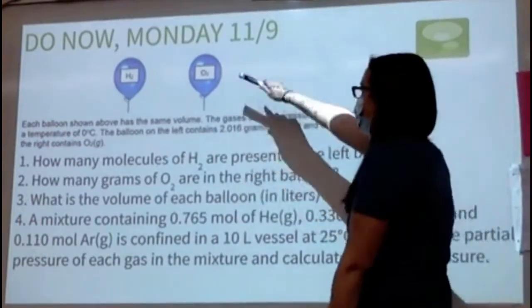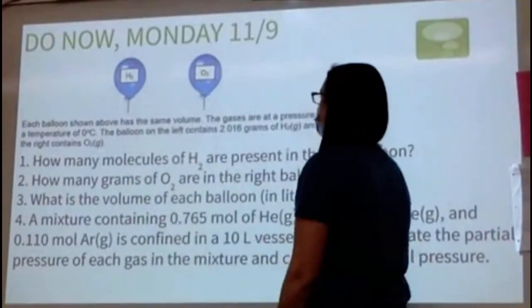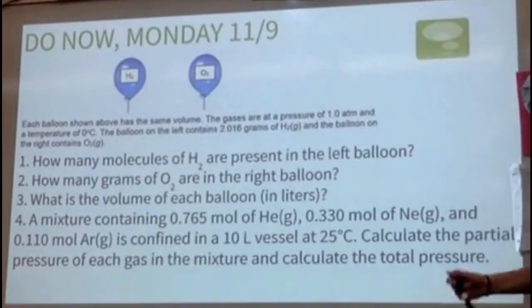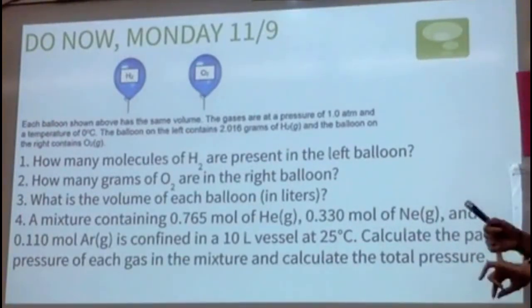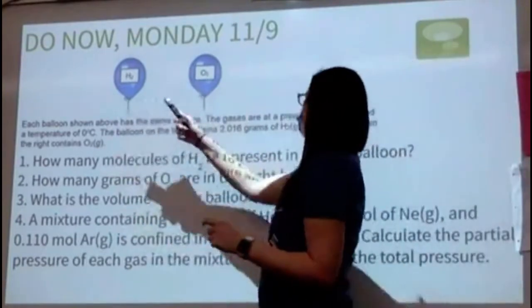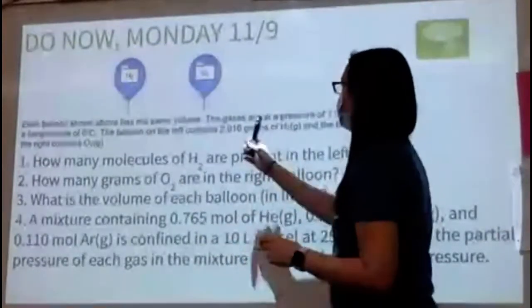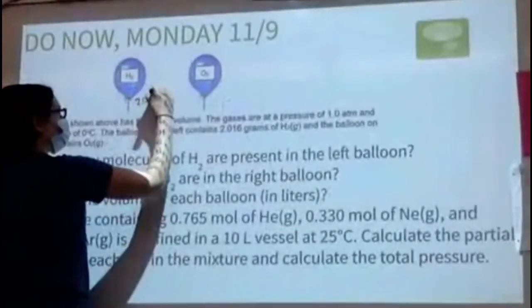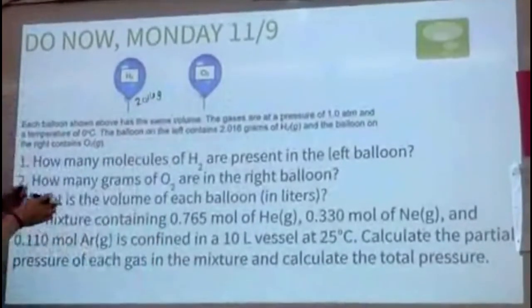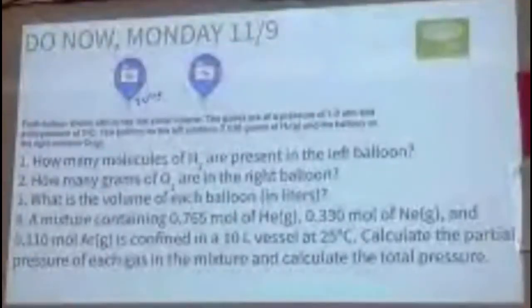It says each balloon shown above has the same volume, the same pressure of 1 atm, and the same temperature of 0 degrees Celsius. The balloon on the left contains 2.016 grams of H2, and the balloon on the right contains oxygen. Number one: how many molecules of H2 are present in the left balloon?